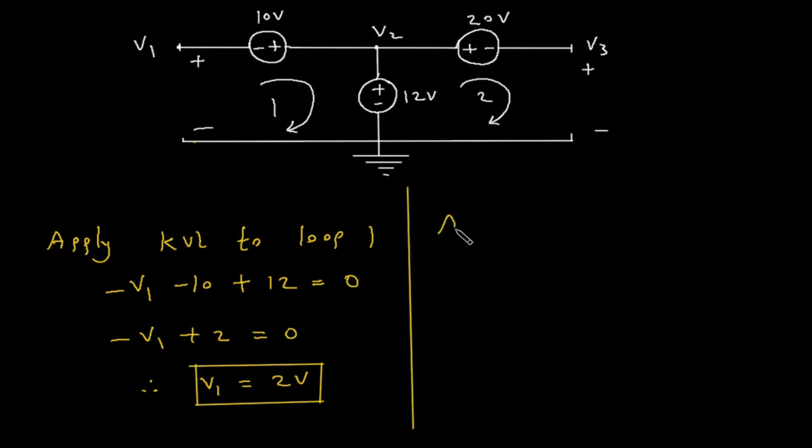Now, we will apply KVL to loop number 2. Let's say we will start from this point.